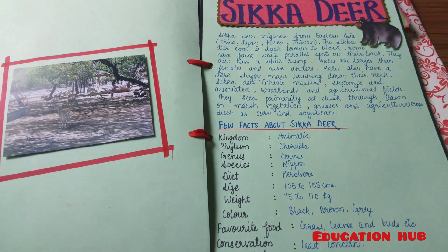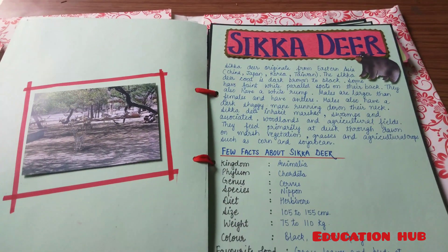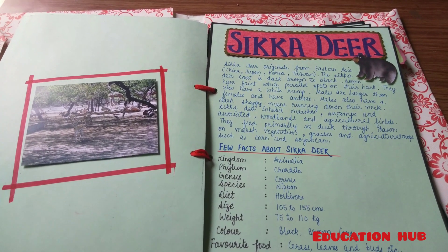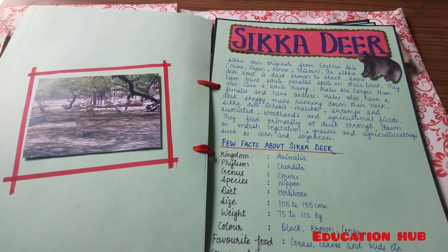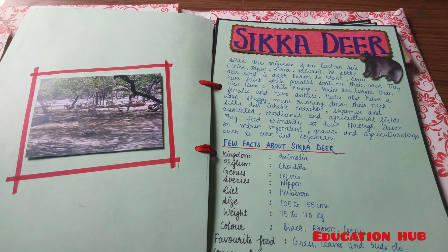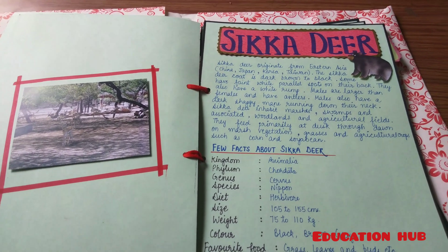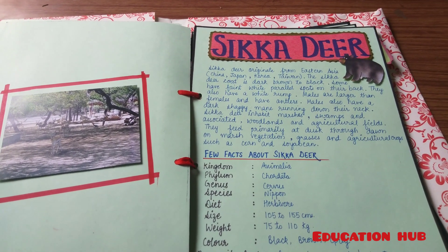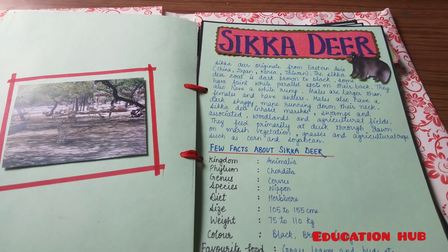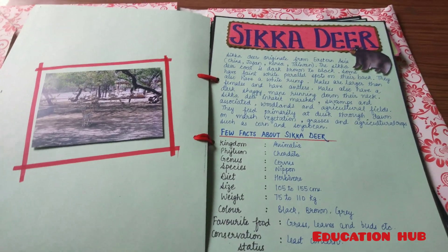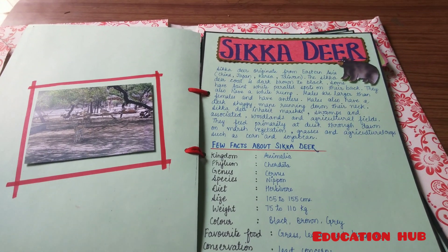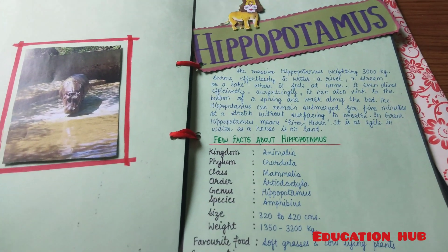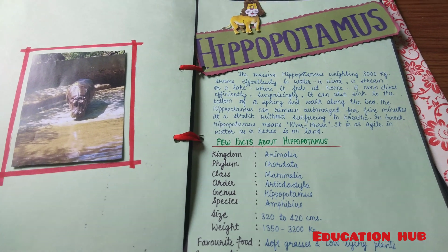Here is the Sika Deer. If you visit National Geological Park, you will find that there are lots of varieties of deer. And here is about hippopotamuses.